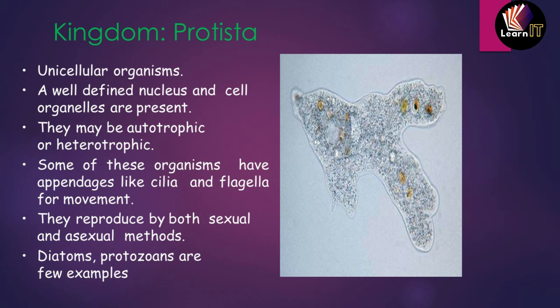Similar to Monera, Protista also have autotrophic or heterotrophic modes of nutrition. A main difference is that Protista organisms can have cilia and flagella — like appendages that allow movement — so the organism can move from one place to another, which Monera organisms cannot do on their own.